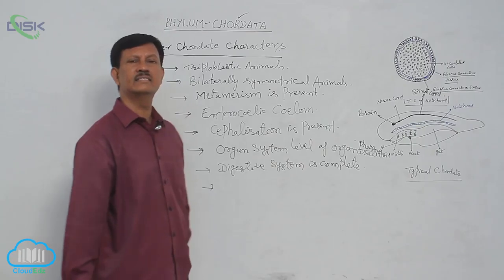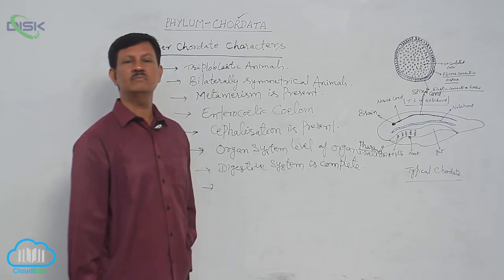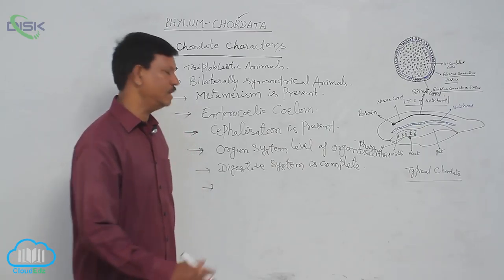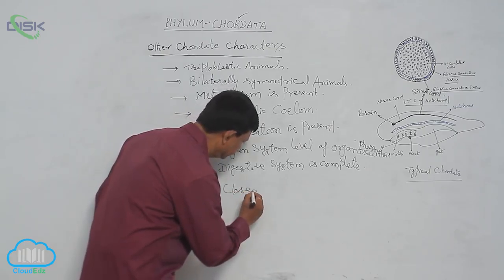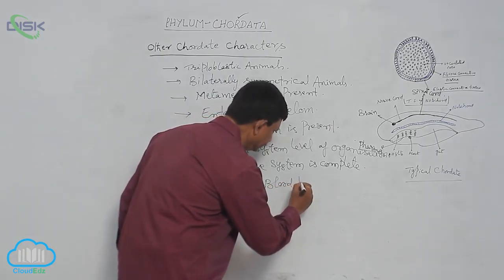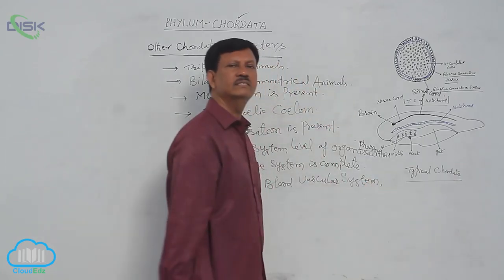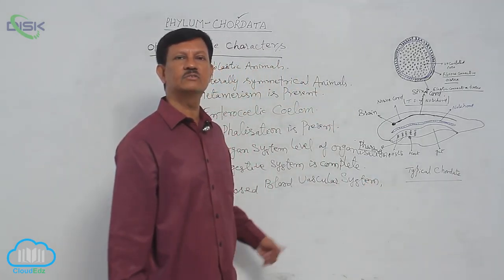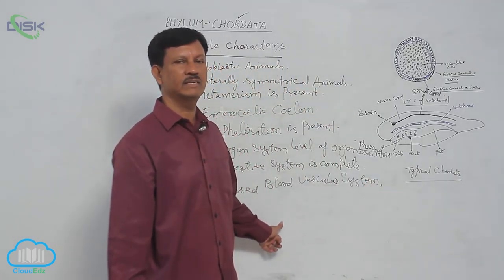The circulatory system is also well developed. It is a closed blood vascular system. Blood is found in the blood vessels, hence it is known as a closed blood vascular system. The heart is situated on the ventral side, ventral heart.